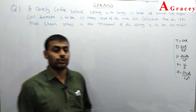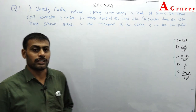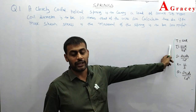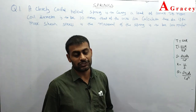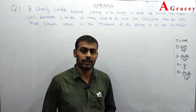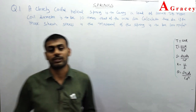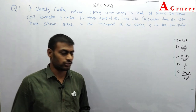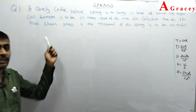In lecture 2 we discussed the close coil helical spring derivation. We found the torque T = W×r, the shear stress formula, the deflection delta, the stiffness k, and the angular twist theta. Based on these formulas from the previous lecture derivation, I will now discuss some conceptual questions on springs. Let's start with the first question, which is already written on the board.